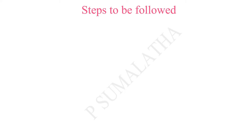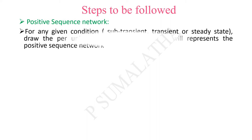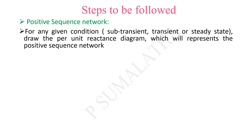What are the steps to be followed to draw the sequence networks? For the positive sequence network, for any given condition, whenever the system is subjected to a fault, it will undergo three different states: sub-transient, transient, or steady-state condition. Whenever we draw the per unit reactance diagram, we draw it with respect to one of these states. For the given condition, draw the per unit reactance diagram — that reactance diagram will represent the positive sequence network.